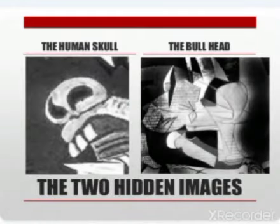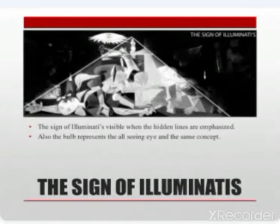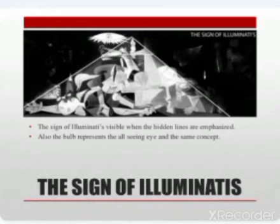Then the human skull and the bull head — two hidden images: the skull and the bull head. The bull may symbolize Spain. There is also another reading of the painting — the sign of the Illuminati is visible when the hidden lines are emphasized. The bulb which represents the all-seeing eye also shares the same concept.